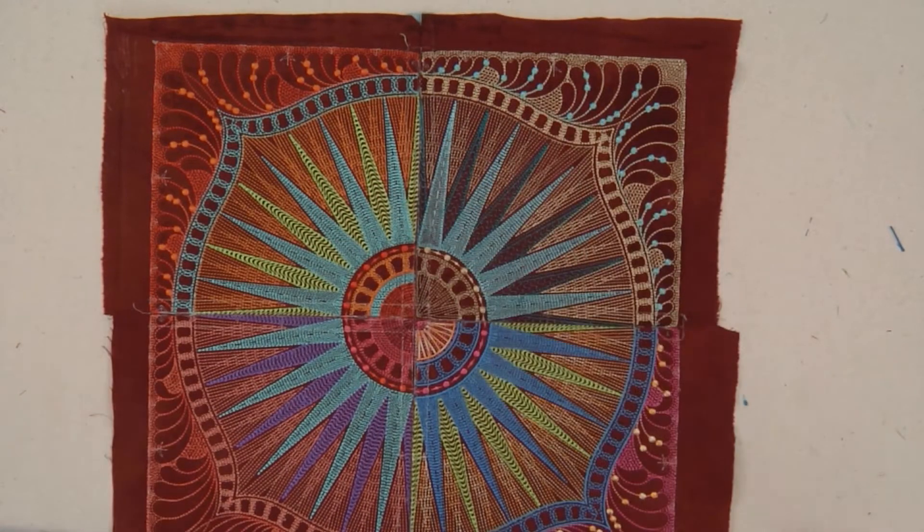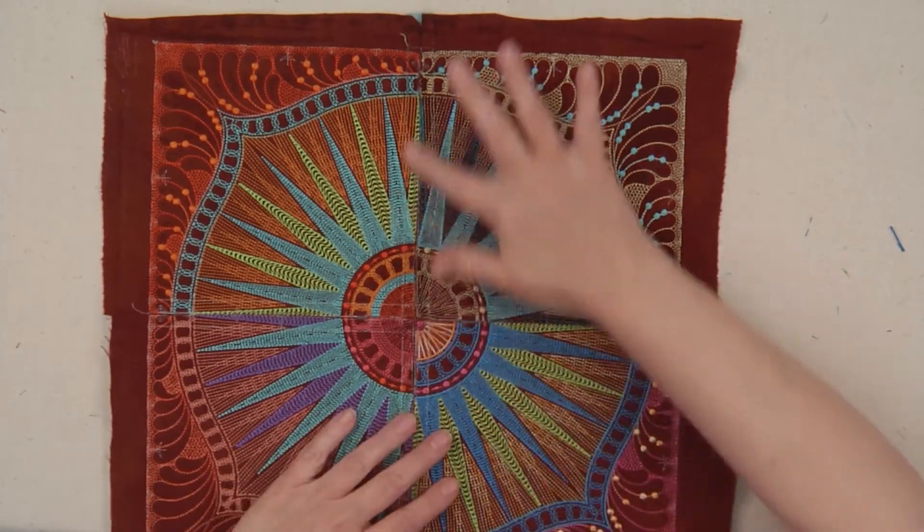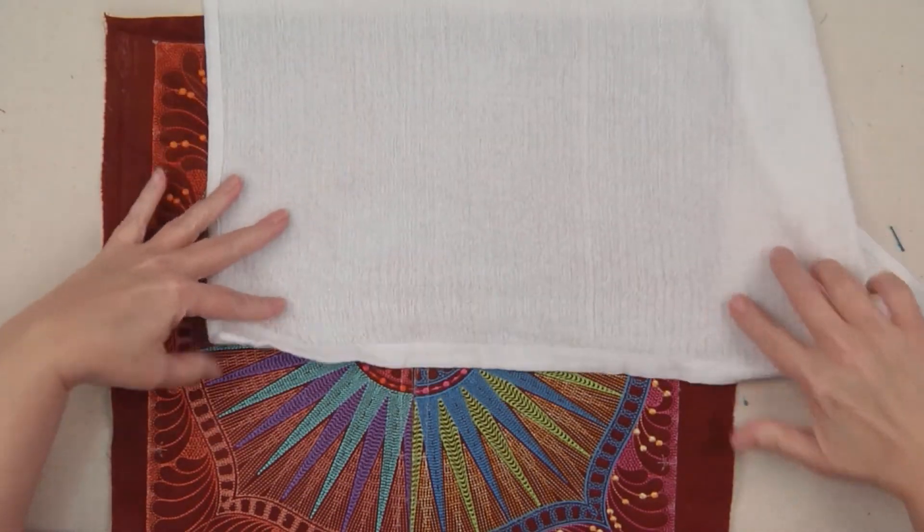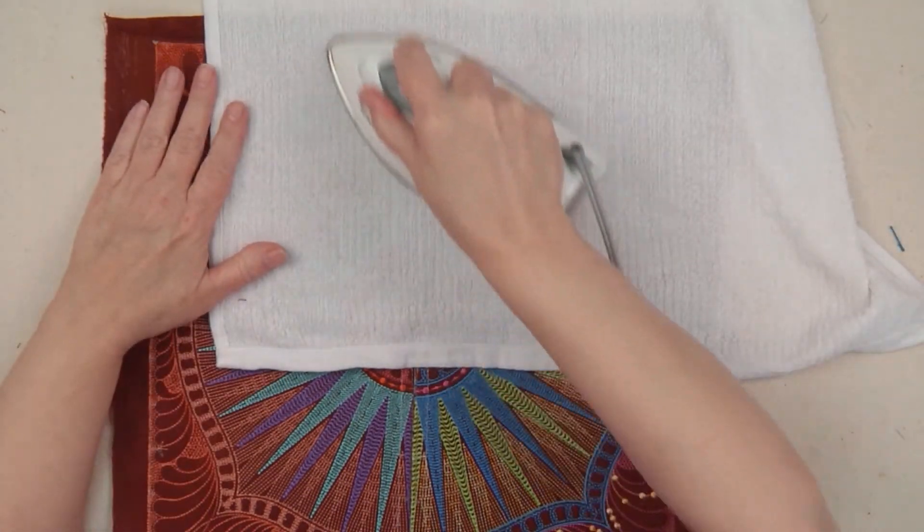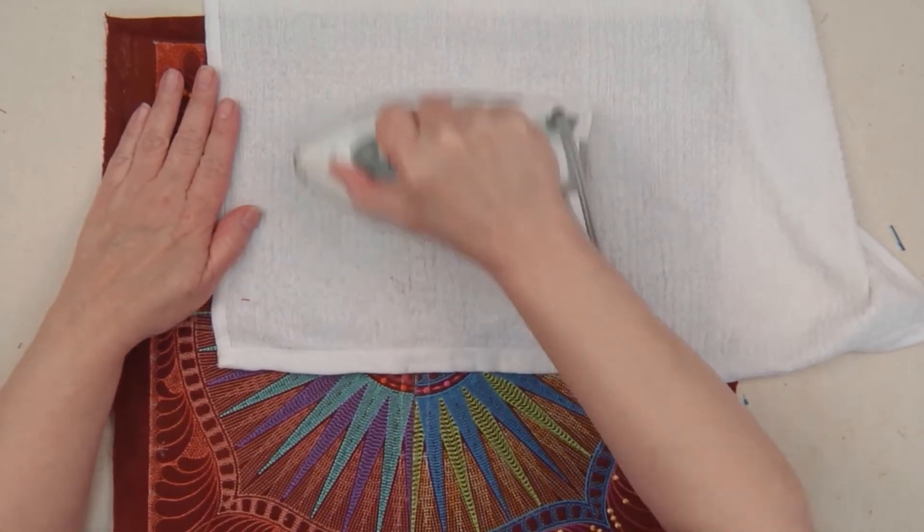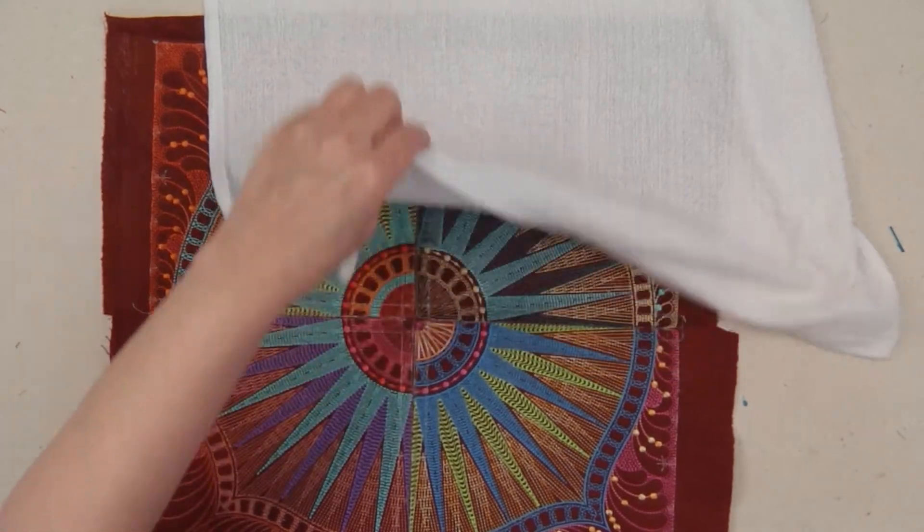If there is still water-soluble thread in that space, just do it again. If I'm working with a really delicate fabric, I like to let it dry before I go back and repeat the pressing to get the water-soluble thread out.